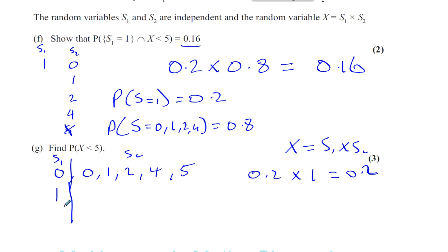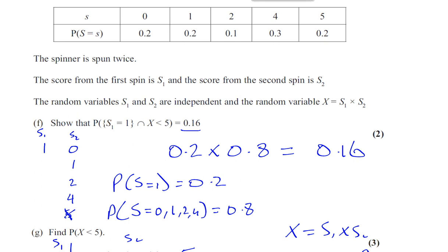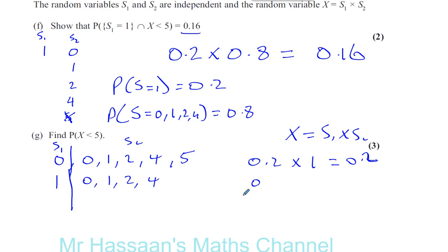If S1 = 1, you can get S2 = 0, 1, 2, or 4, but not 5, because 1 × 5 = 5 which is not less than 5. So that's the probability of getting a 1, which is 0.2, times 0.8, giving 0.16. The probability of getting a 5 is 0.2, so 1 minus that gives 0.8.